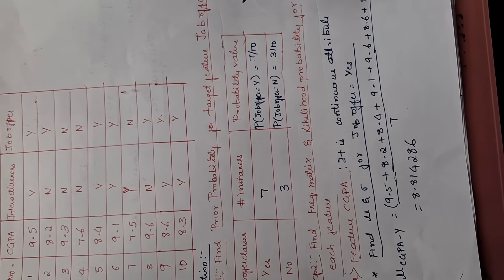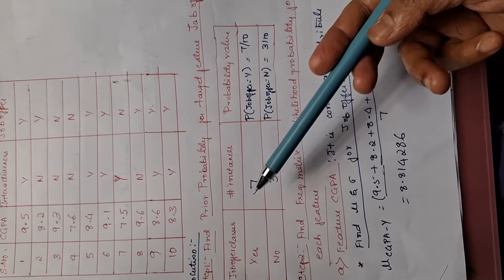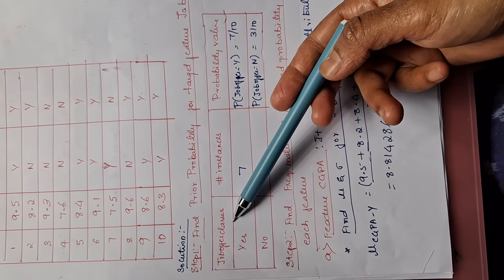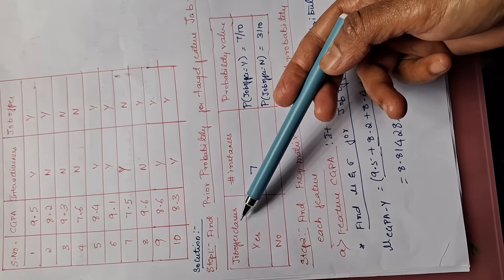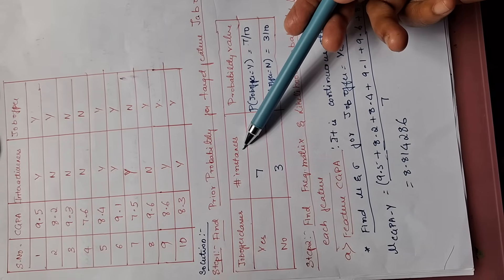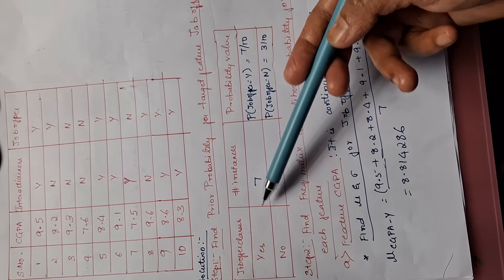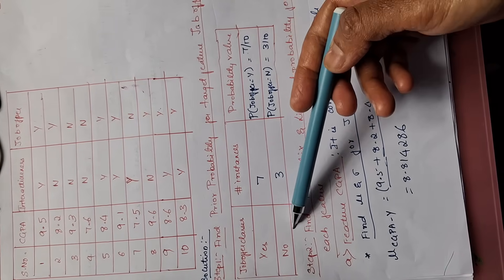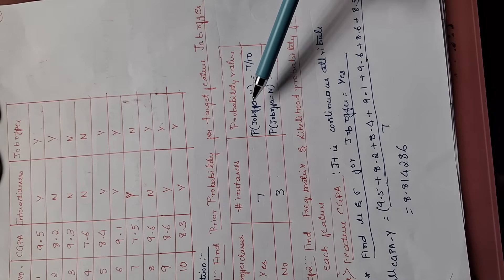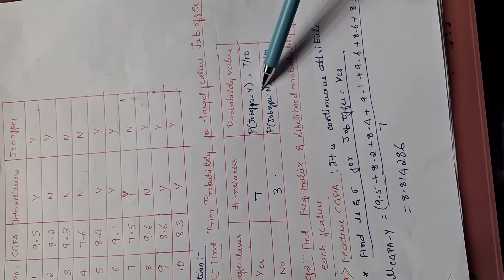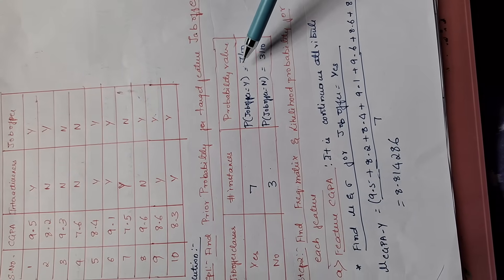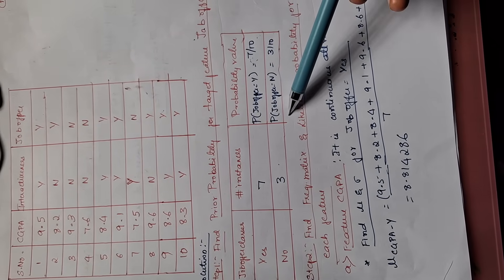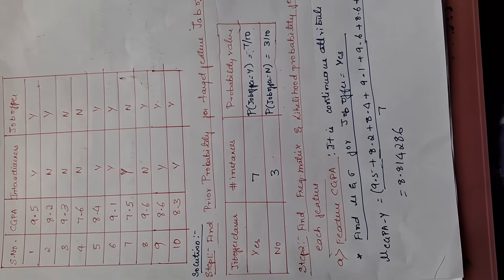Step 1: Find the prior probability for the target feature job offer. First make a table. The first column is job offer classes — yes and no. The second column is number of instances. The third column is the probability value. If you count, there are 7 yes and 3 no's. The probability that job offer equals yes is 7 divided by 10, because 7 is the number of yes instances and 10 is the total. Similarly, probability of job offer equals no is 3 by 10. That is Step 1.